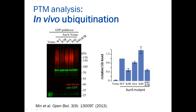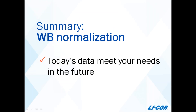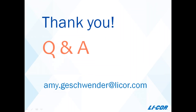Our time is about up, so I'll wrap up by summarizing the take-home messages about Western blot normalization. There are several valid methods, and the key is to understand how each method works so you can select the most appropriate and most relevant internal loading control — a control that fits the context and biology of your experiment — so you can accurately and effectively correct for variability. Because change isn't just coming, it's already in progress, and you should have confidence that the data you collect today will meet your needs not just today, but also in the future when you publish and present those results. Thank you so much for attending. We're going to close with a few minutes of Q&A — submit your questions through the chat window, and you'll receive a follow-up email with a link to this recording and a participant handout with all the references and links from today's talk.